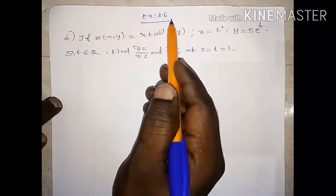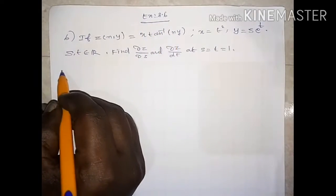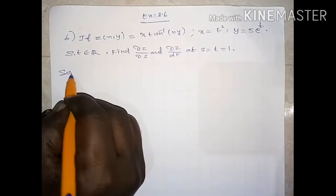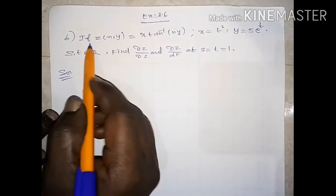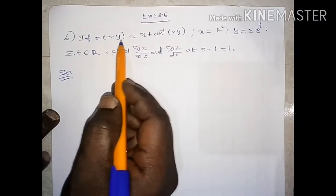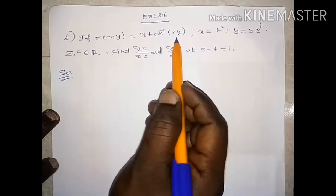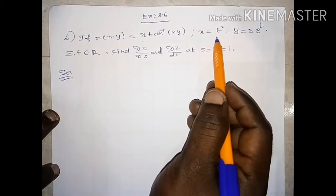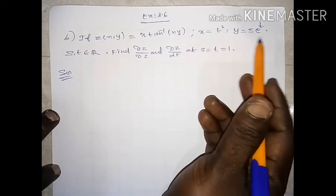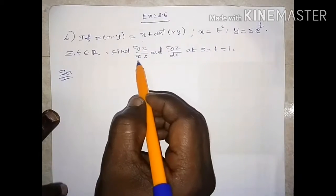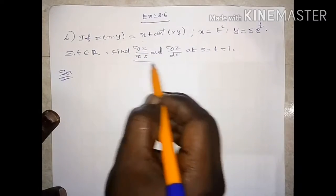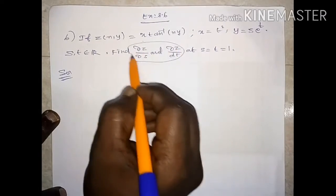My students, next we see Exercise 8.6. If z of x, y equals to some value, x equals to a value, y equals to a value, find the partial derivative's value.